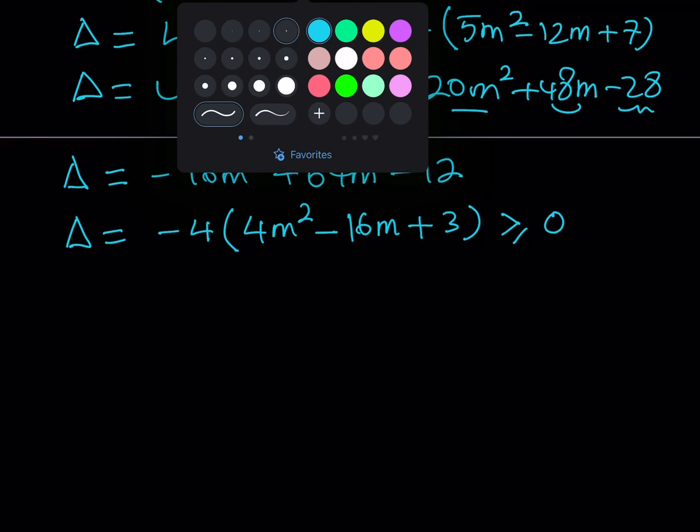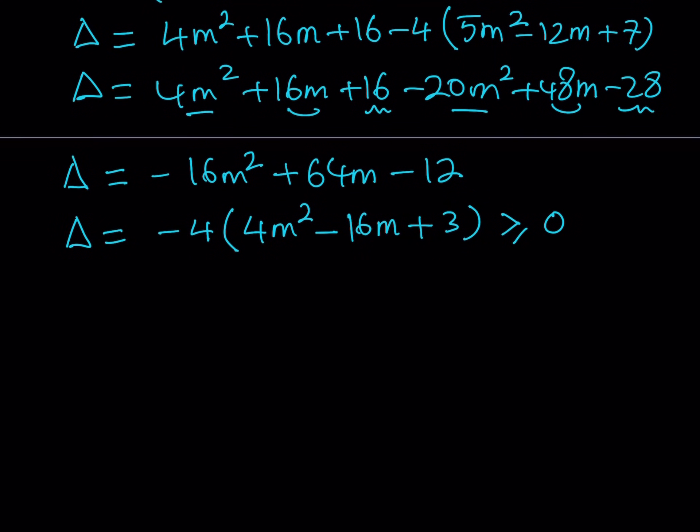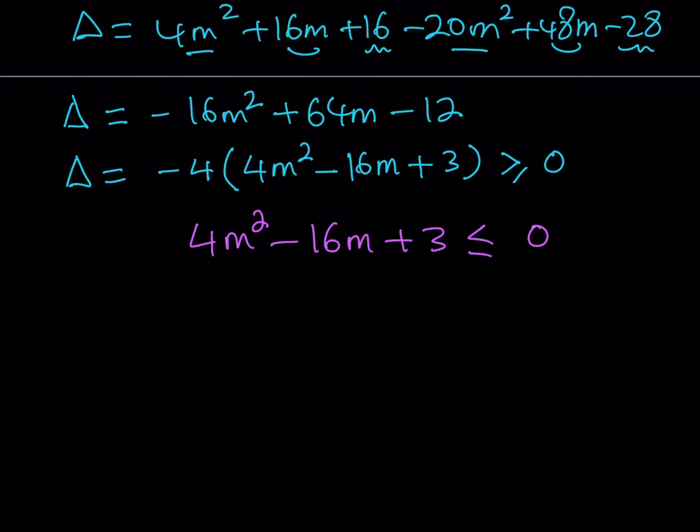And when you do, remember that the inequality sign will be changed. So instead of greater or equal to zero, it's going to be less than or equal to zero. Now, when you get a quadratic equation like this, basically, you're talking about a parabola. Let's talk about this.